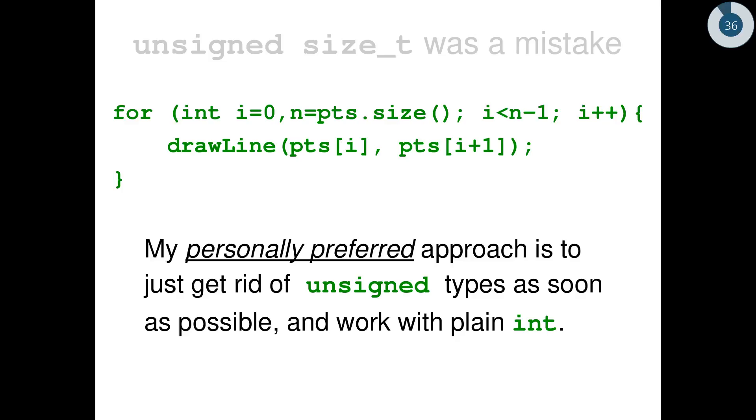My personally preferred way to solve this issue and steer away from these bugs, this kind of bugs, is to just get rid of unsigned as soon as possible. So in this code, for example, I will probably copy the size of the vector to n, a regular integer, and then just use the integer for this. Of course, I have to pay attention that the vector size should not change during the iteration. But in this code, I think this code is clear to read, and it's also safe if you do something different.